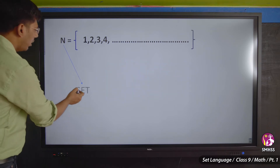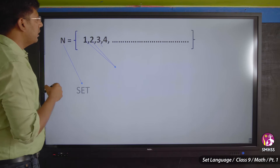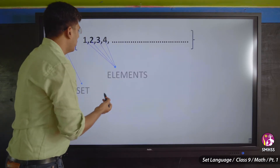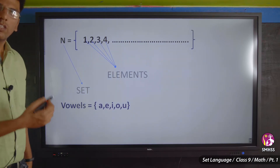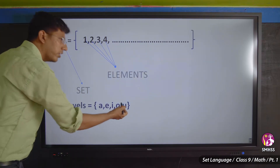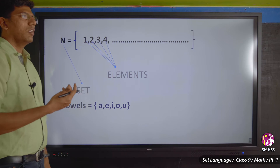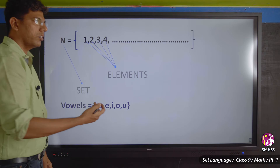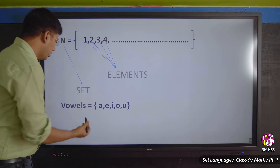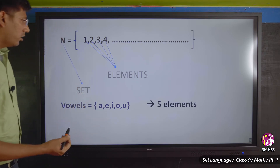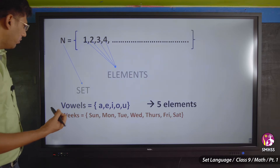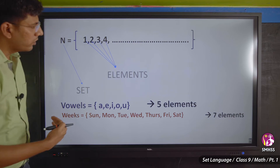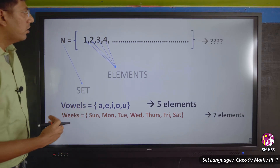The items inside a set are called elements. Vowels in the alphabet form a set — A, E, I, O, U — you cannot change the answer. That set has five elements. Similarly, the days of the week form a set with seven elements.